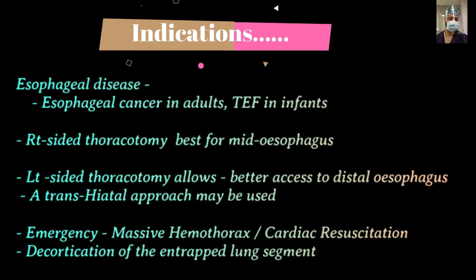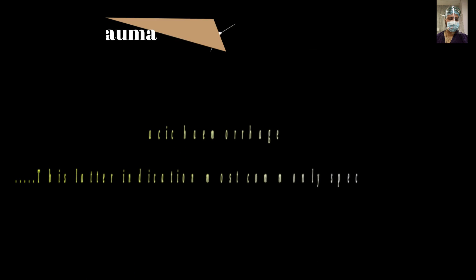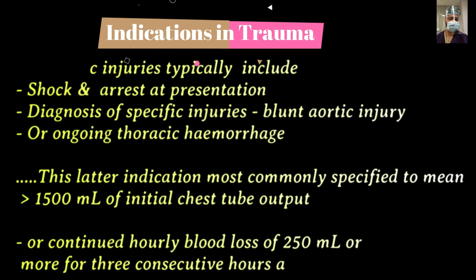Right-side thoracotomy is best for mid-esophageal diseases, and left-side thoracotomy allows better access to the distal esophagus; a transhiatal approach may be used on a case-to-case basis. Emergency indications for thoracotomy include massive hemothorax, cardiac resuscitation, and decortication of the entire lung. In a trauma patient, indications typically include shock, cardiac arrest, or suspicion of a specific diagnosis like blunt aortic injury.